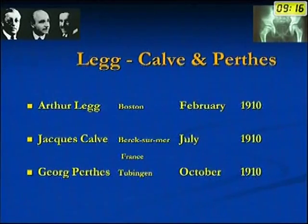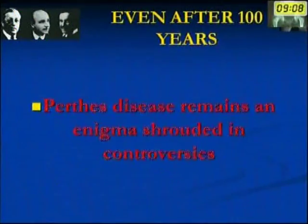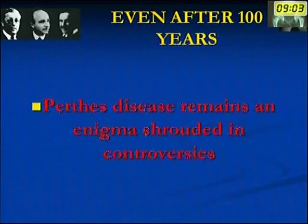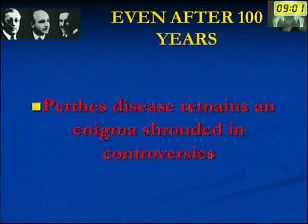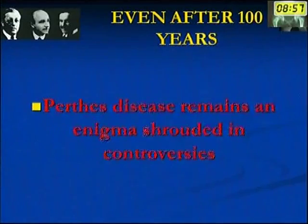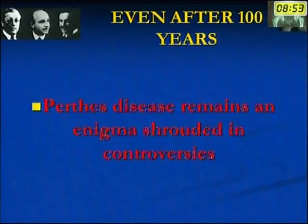More than 100 years ago, Arthur Legg, Jacques Calvé, and George Perthes described Perthes disease. But even after 100 years, Perthes disease remains an enigma shrouded in controversies. We do not know the etiology of the disease, and we have very little idea regarding the pathogenesis, and the treatment is highly controversial.